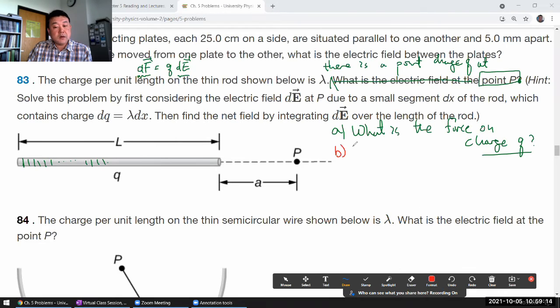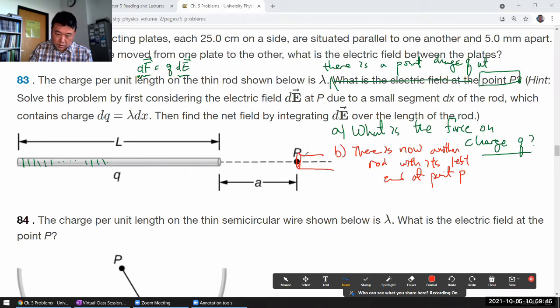For part B, say there is now another rod with its left end at point P. So let me just draw a version of that. So the question could specify the parameters of this rod. Maybe it has the same length as the other rod, or maybe it doesn't, but the question would specify enough of the parameters to tell you how much charge is on this rod and all that stuff. And then someone asks you the question, the follow question. What is the force on this rod?